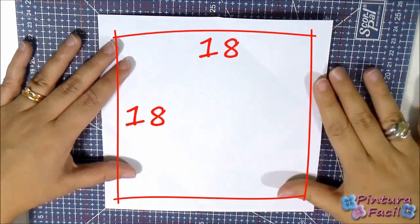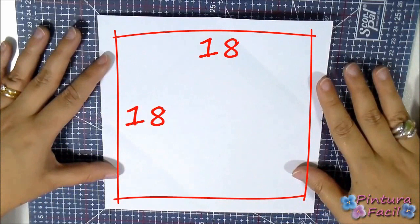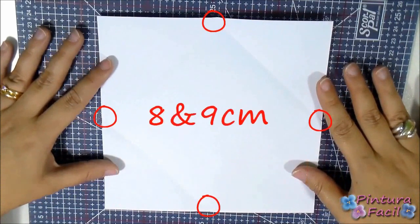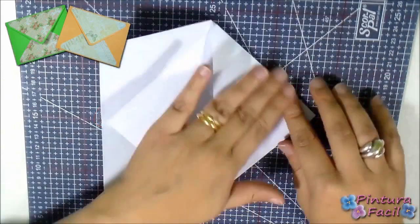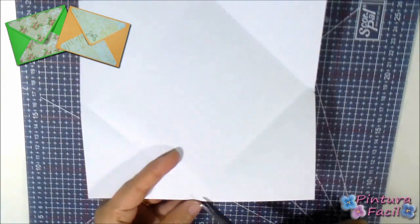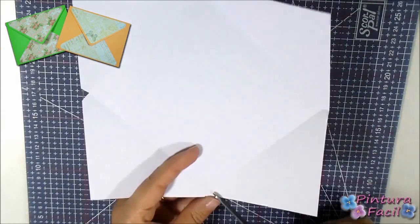To make the envelope, you'll need a white paper square, 18 by 18 cm, and make marks at 8 and 9 cm. Click right now on your screen or on the link I let you in the description below for watching how to make the marks and fold the envelope.